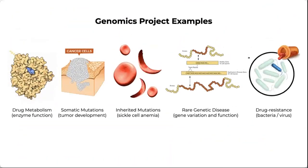We will also look at excellent example applications of genomics, such as genomic variants affecting drug metabolism by changing enzymatic function, somatic mutations that lead to tumorigenesis or tumor development, inherited mutations like sickle cell anemia, and rare genetic diseases that can arise from gene variations and functions. Finally, we can also explore the development of drug resistance in pathogens like Mycobacterium tuberculosis and other pathogens, which are increasingly becoming resistant to one or multiple drugs used to treat them.